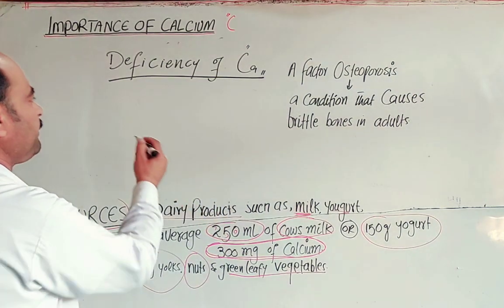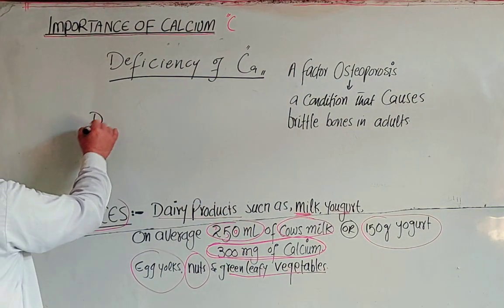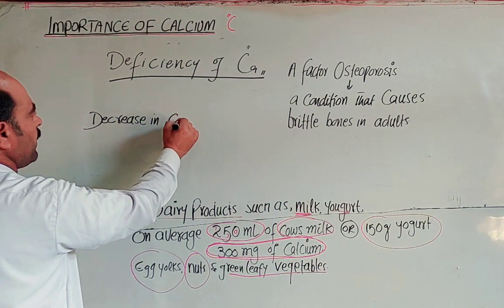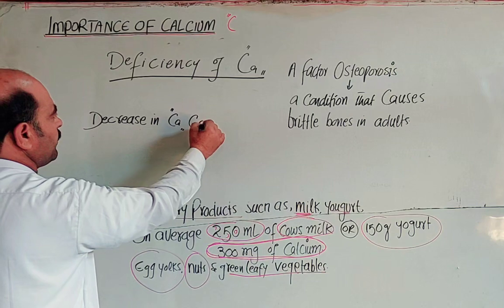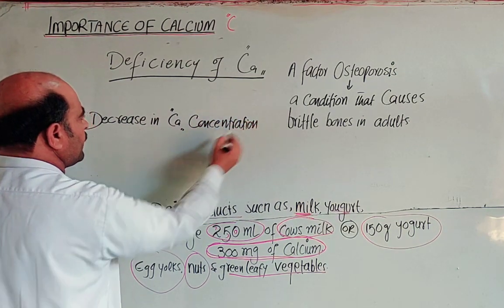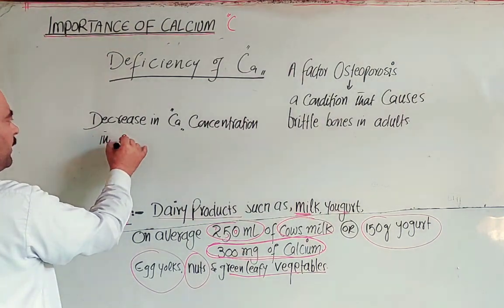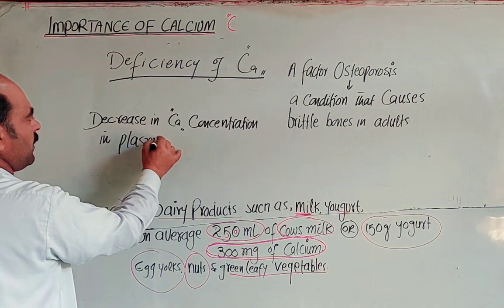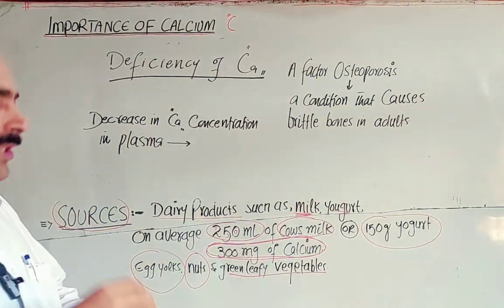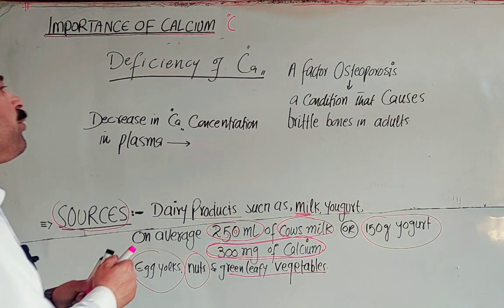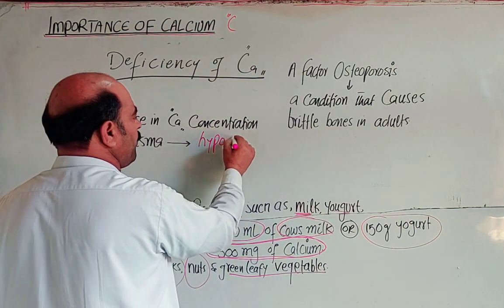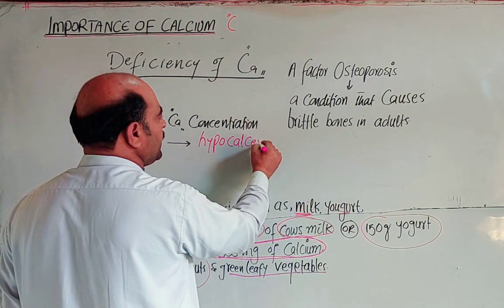A decrease in calcium concentration in blood plasma is called hypocalcemia. Hypocalcemia refers to the condition where the calcium concentration in the blood plasma is reduced below the normal level.